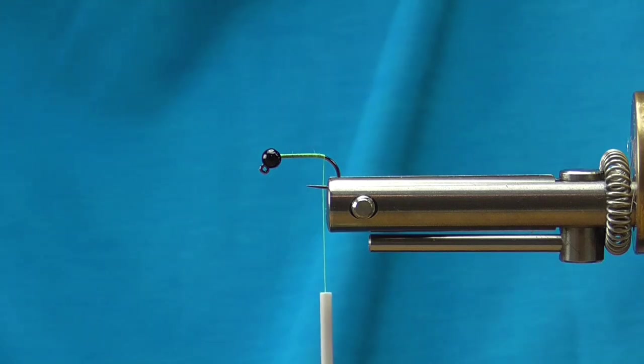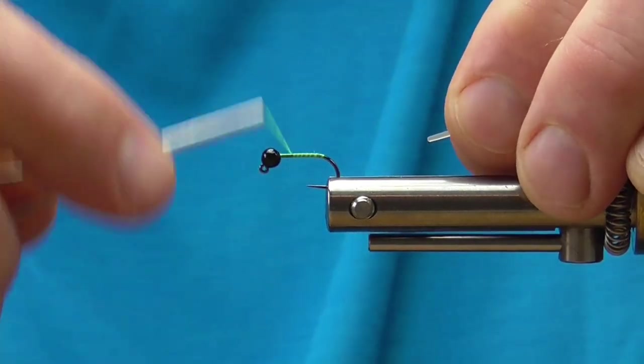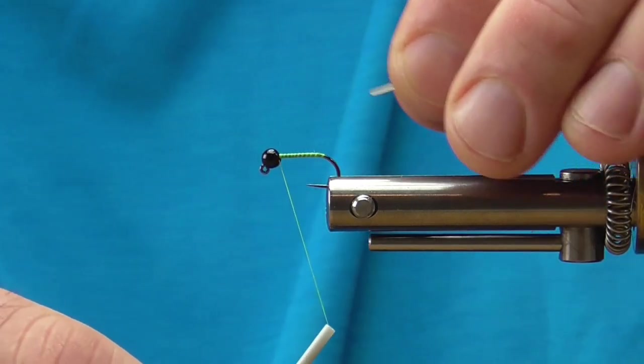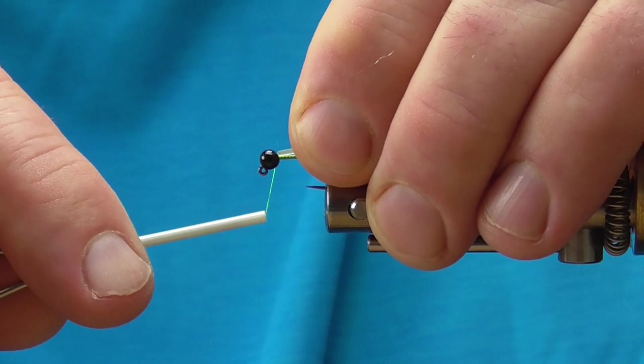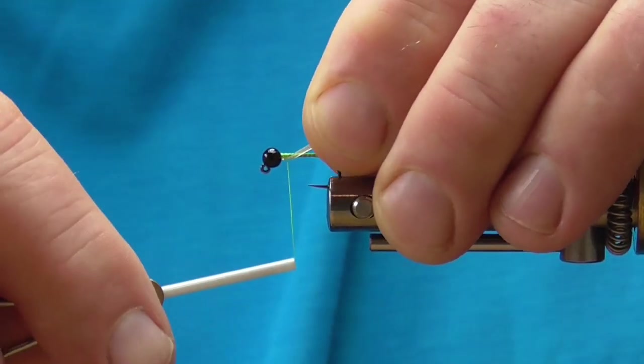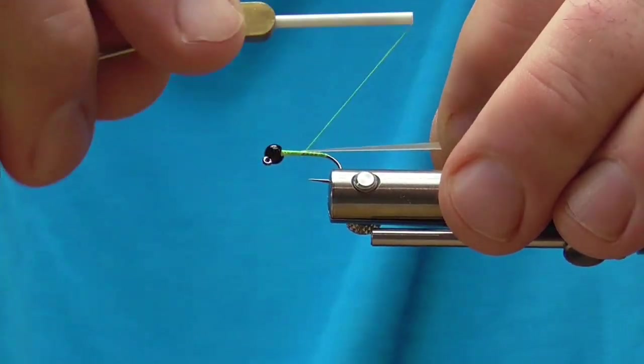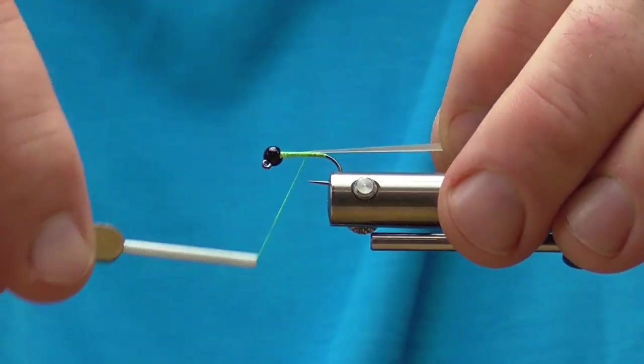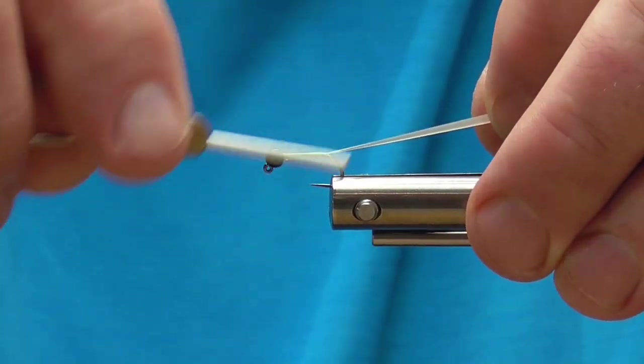It's translucent, which is important because that's going to allow us to really add some nice pearl effect to it. Wrapping back up to the top of the hook, I'm going to tie in the small end, the tapered end, to the back of the bead and then again wrap backwards to the bend of the hook.